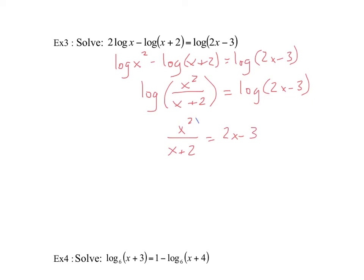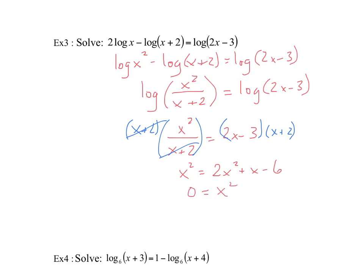So we write x squared over (x plus 2) equals 2x minus 3. Multiplying both sides by (x plus 2) to clear the denominator gives x squared equals (2x minus 3)(x plus 2). Expanding the right side: 2x squared minus 3x plus 4x minus 6, which is 2x squared plus x minus 6. Moving x squared over gives 0 equals x squared plus x minus 6. Factoring: (x plus 3)(x minus 2), so x equals negative 3 and x equals 2.